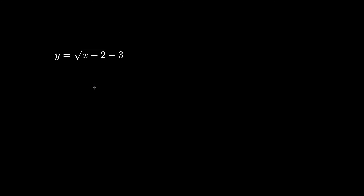Can we sketch this graph? We know that y equals square root of x is the base graph. It looks like this. 0, 0 is the origin and it curves upwards towards the right.